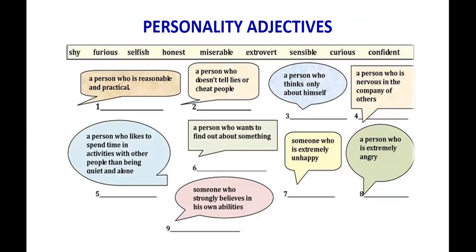Let me talk about different personality adjectives and share this additional material for you to continue practicing. Here I have some personality adjectives: shy, furious, selfish, honest, miserable, extrovert, sensible, curious, confident. And here I have their descriptions — for example: a person who is reasonable and practical; a person who doesn't tell lies; a person who thinks only about himself; a person nervous in company of others; a person who likes activities with others.